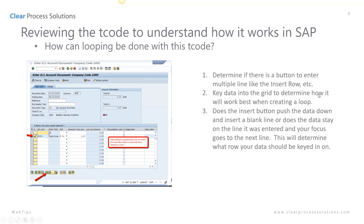Key the data into the grid to determine how it works best to create the loop — get in here and just play with it and see what works best for the recording. You'll find some T codes insert the data and push it down; some of them you'll start on line two and the data is pushed up. It all depends on the T code you're recording, so that's why it's a good idea to work with the T code to find out how that particular T code was designed.